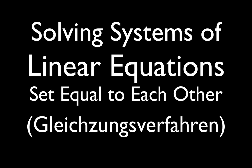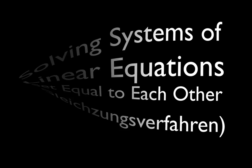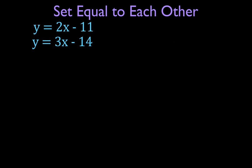In today's video I'm going to go over solving systems of linear equations by setting them equal to each other. Because I'm currently teaching math in Berlin, Germany, I also put down that this in German is known as the Gleichsetzungsverfahren, which is translated to the 'setting them equal to each other' method. In this video I'm going to go over two examples; in the next video I'll go over one more example.